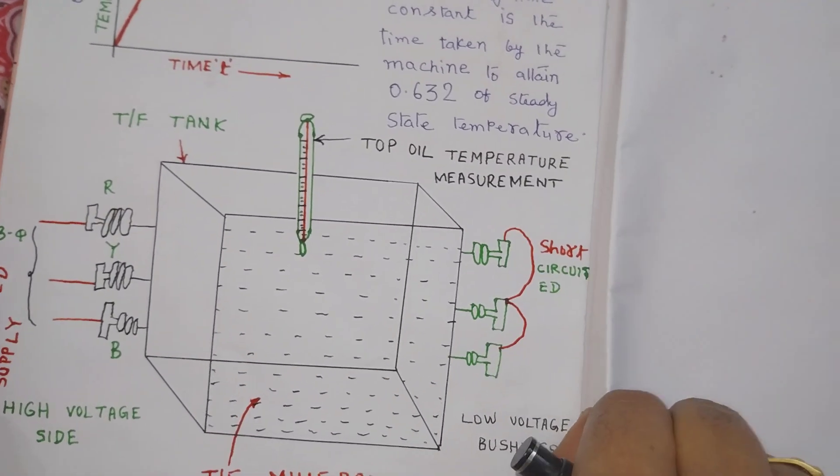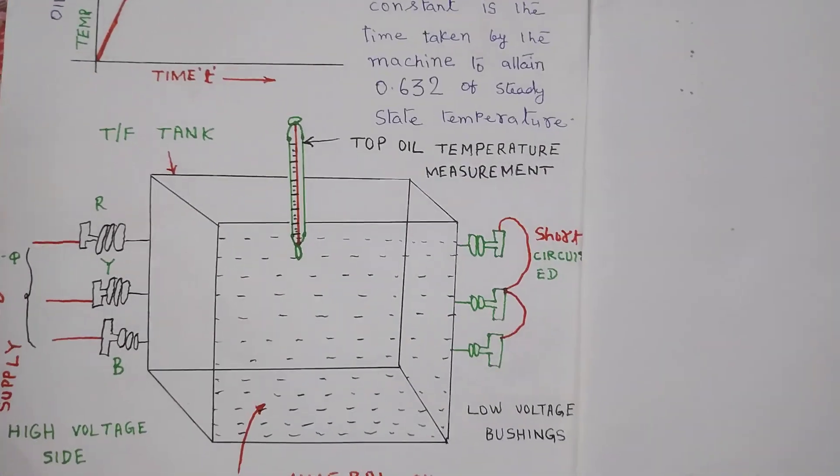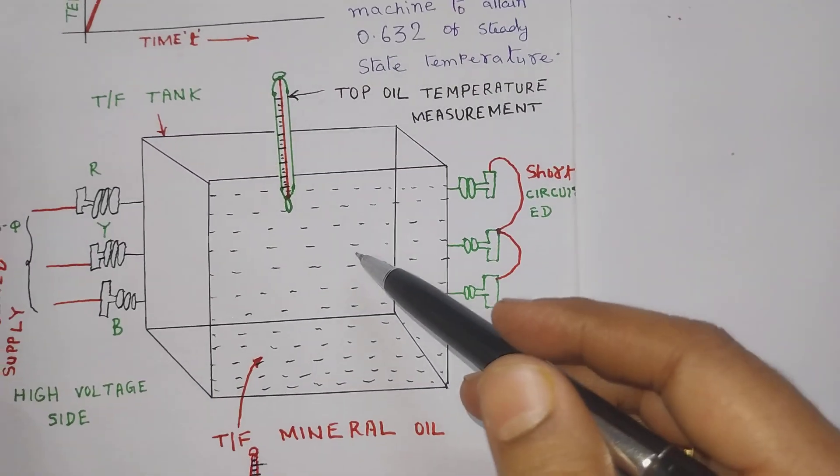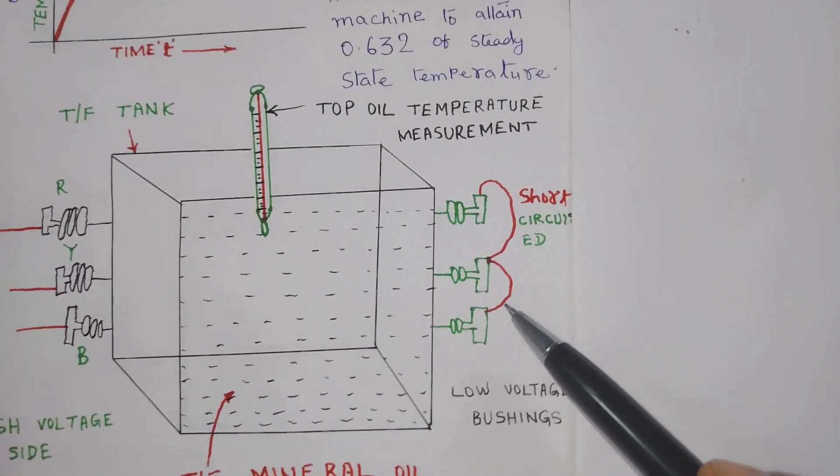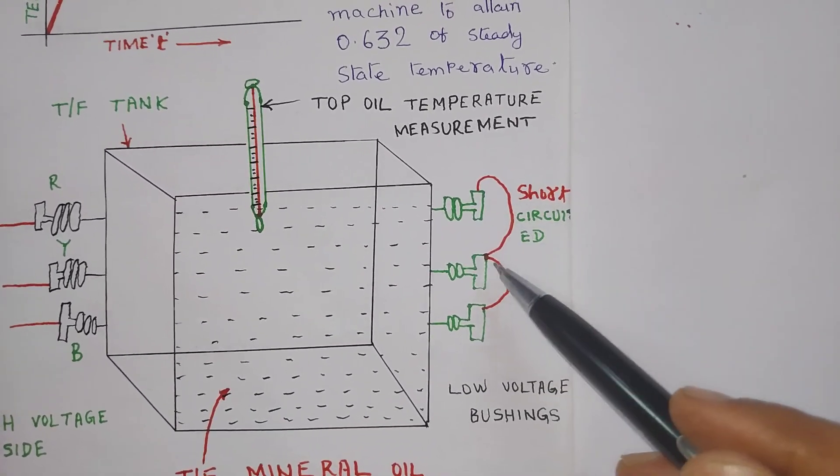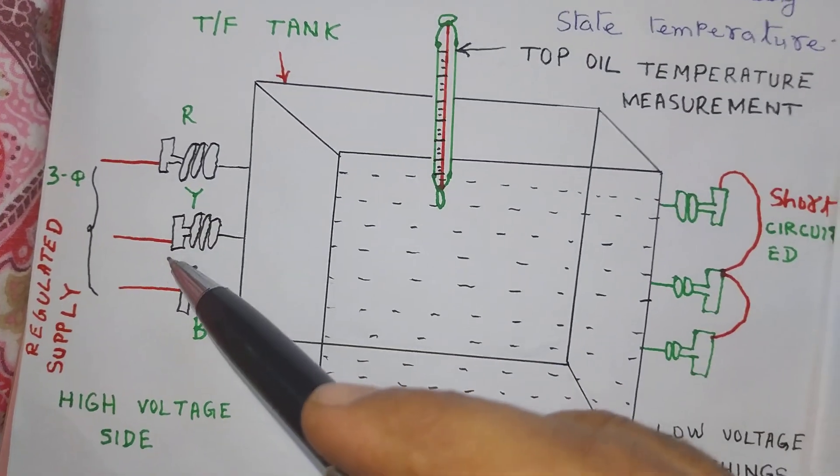Under heat run test, what we will have to do? This is transformer tank, this is low voltage side of the transformer, this is short circuited, and from high voltage side of the transformer through a regulated supply...